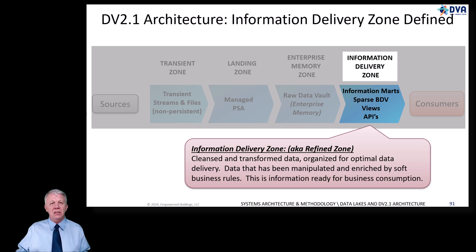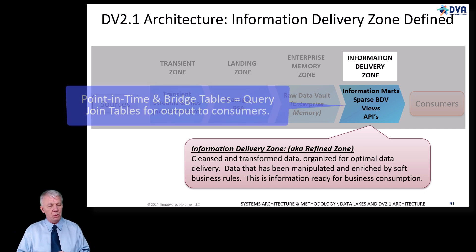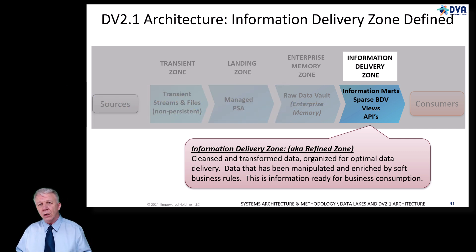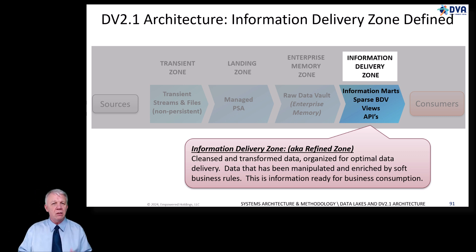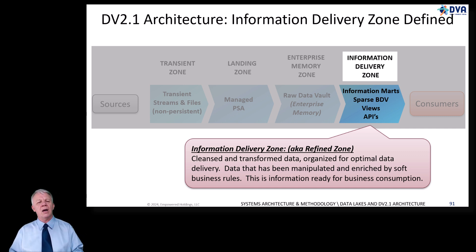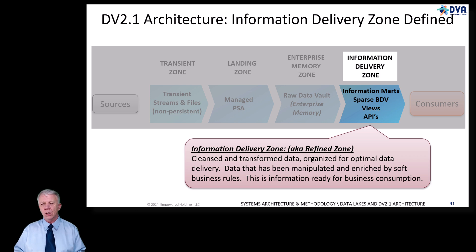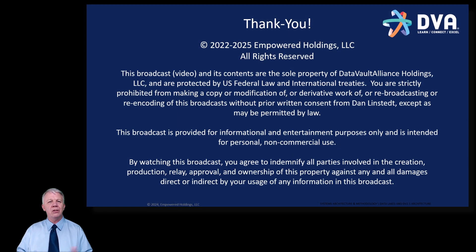In the information delivery zone, we find things like point-in-time and bridge tables for those familiar with Data Vault 2.0, and information marts — or data marts — and sparse business data vault (BDV). You'll find a lot of information that's cleansed, transformed, and organized for optimal delivery, where performance is of utmost importance for getting data out into BI tooling and into the hands of users and consumers. That brings us to the end of this topic.